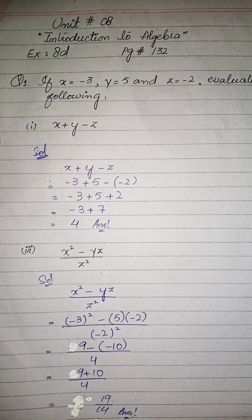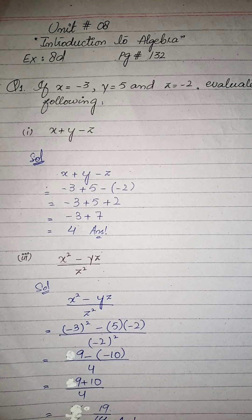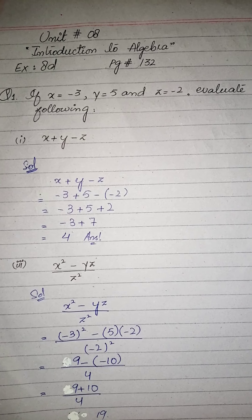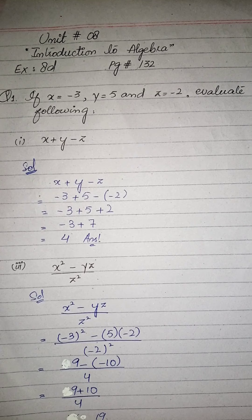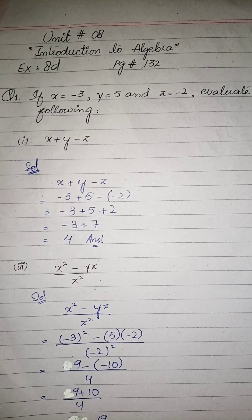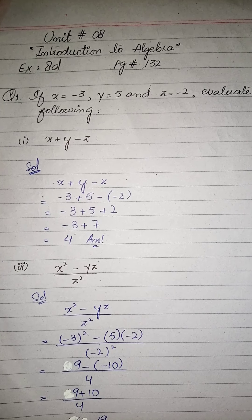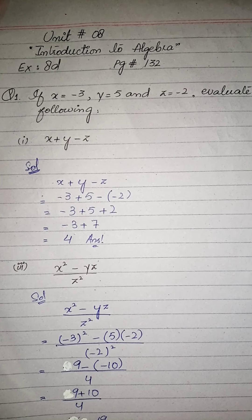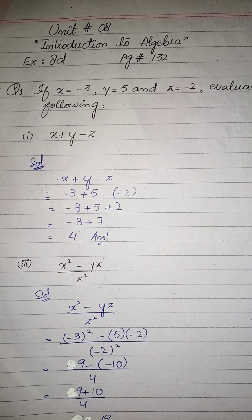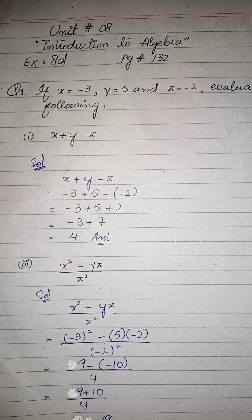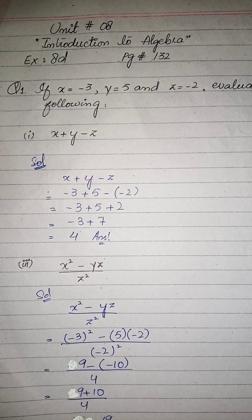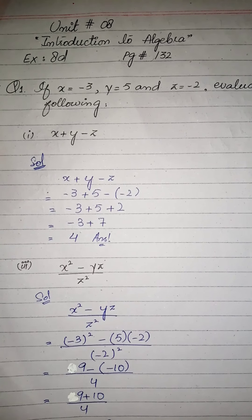Question number one: if x equals to minus 3, y equals to 5, and z equals to minus 2, evaluate the following. ہمیں x، y، z تینوں کی values given ہیں اور ہمیں ان values کو expressions میں put کرنا ہے اور answer دیکھنا ہے۔